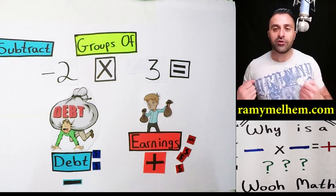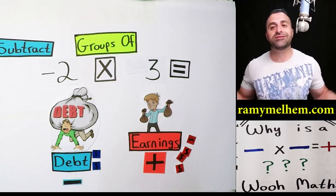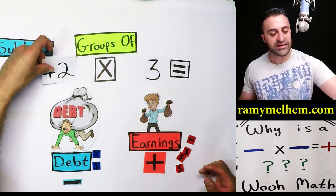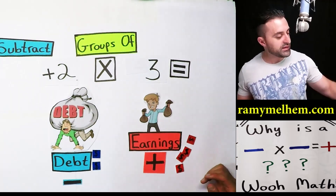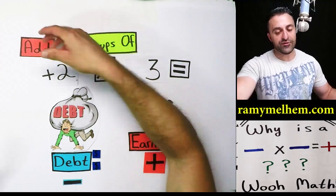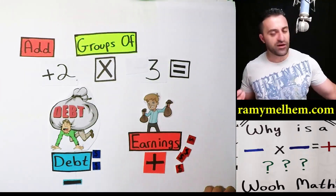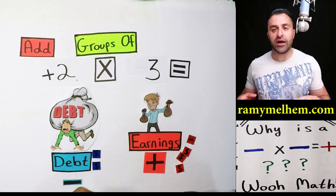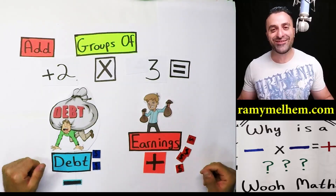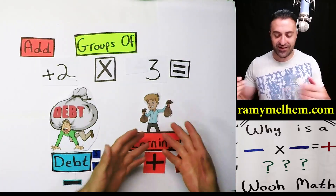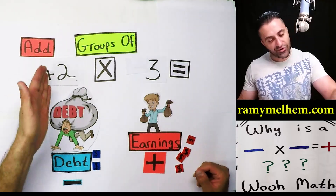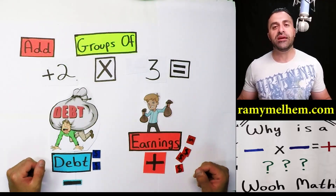Subtract two groups — pull them out — you subtracted groups. But if it's a positive, we are not going to say subtract. Instead, we are going to say add two groups. How do you add two groups of money? You go up to the guy, say 'here's two bags, here you go,' and you've just added two groups of three dollars in each one.